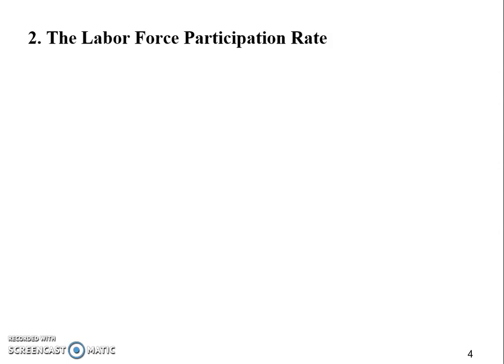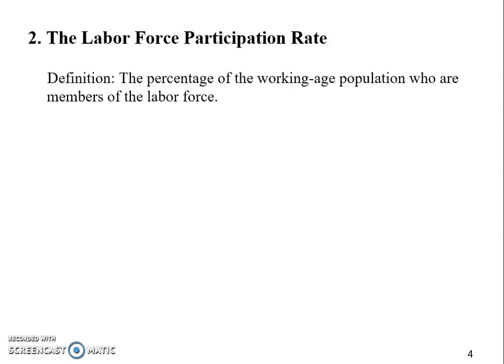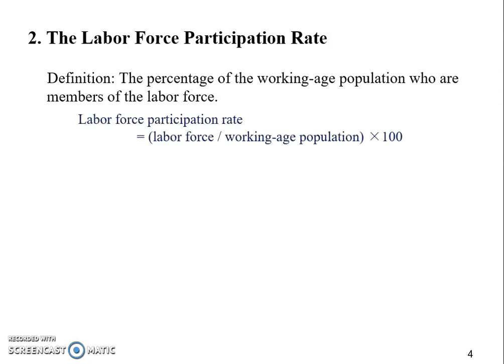Now, let's get this rate defined. The participation rate is the percentage of the working-age population who are members of the labor force. Mathematically, this is straightforward: it's the labor force divided by the working-age population, multiplied by 100 to get the percentage.